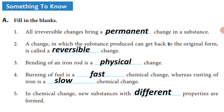First, all irreversible changes bring a dash change in a substance. Answer: Permanent. Second, a change in which the substance produced can get back to the original form is called a dash change. Answer: Reversible.